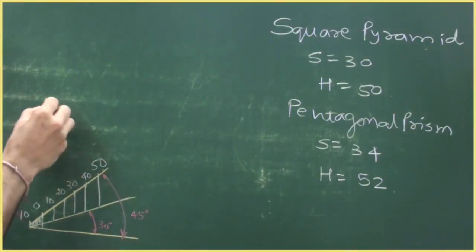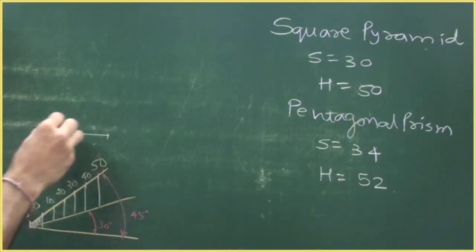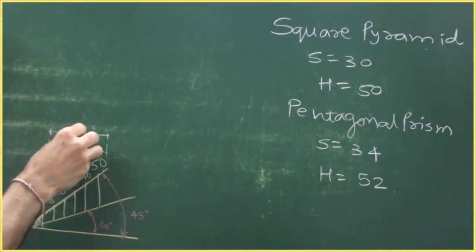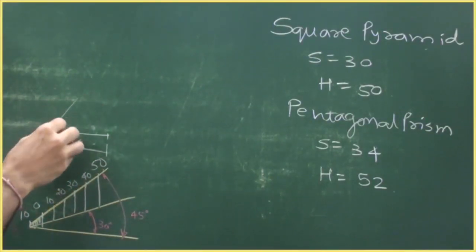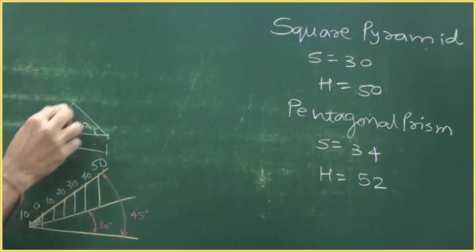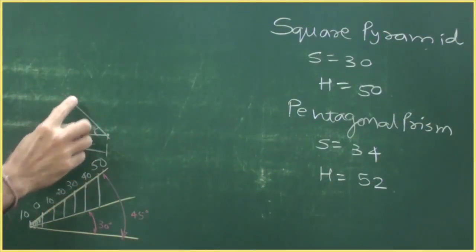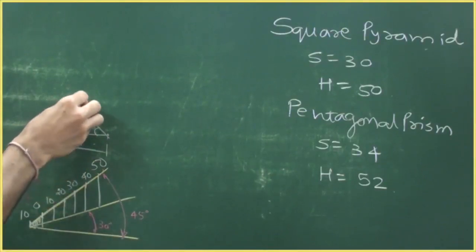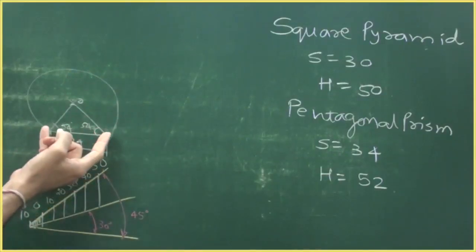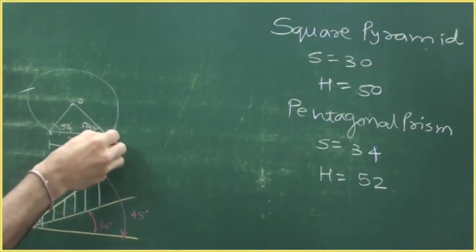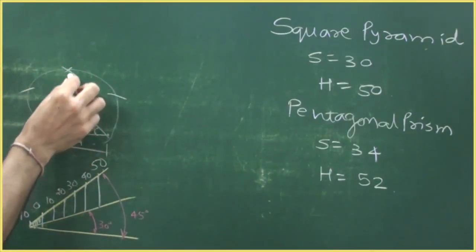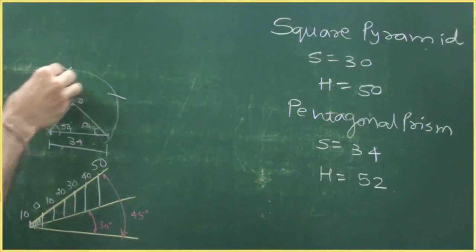To draw a pentagon, first draw a horizontal line — the side is 34 mm. Then take 54 degrees from both sides. Wherever they meet is the center point O. From O you can draw a circle. From here cut on this side, from here cut on this side, and from here cut on this side — it should come exactly at the top. This is the pentagon.